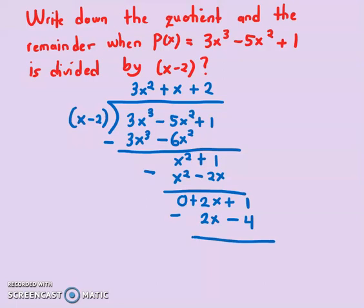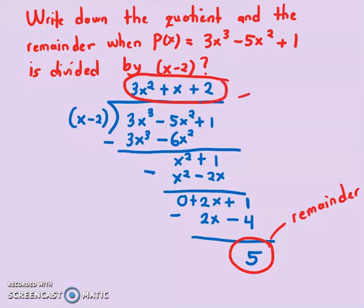Now divide it. This will be 0. 1 + 4 is 5. So we have, this is called the remainder.